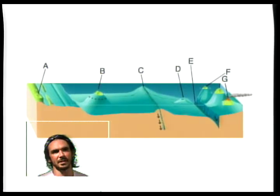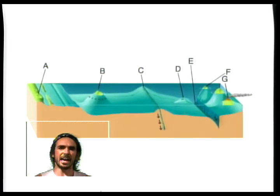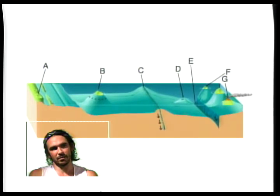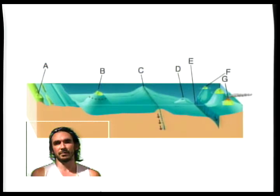And for F and G, what we have is another example where we could maybe catch volcanic minerals as they erupt, and instead of falling into the ocean, we catch them and we bring them back to land.